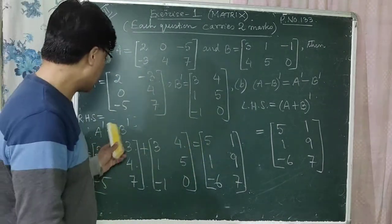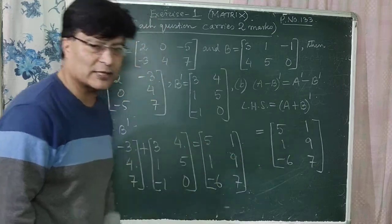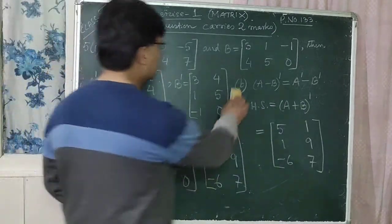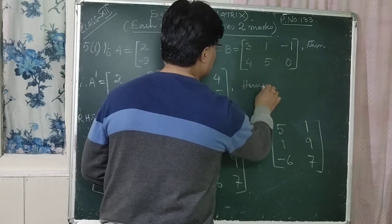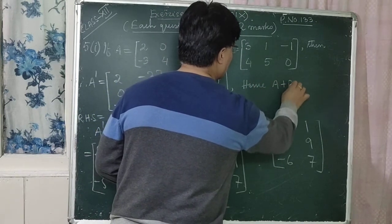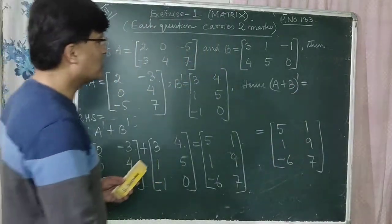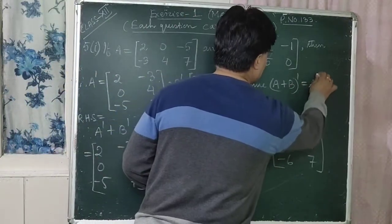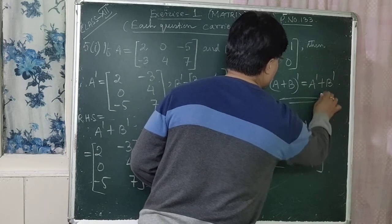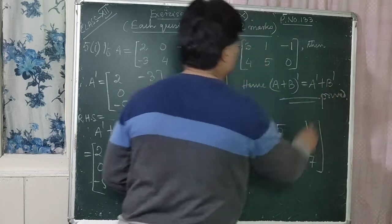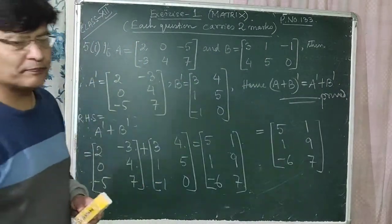A dash plus B dash is also [5,1; 1,9; -6,7]. These two matrices are equal. Hence A plus B dash is equal to A dash plus B dash. So it is proved.